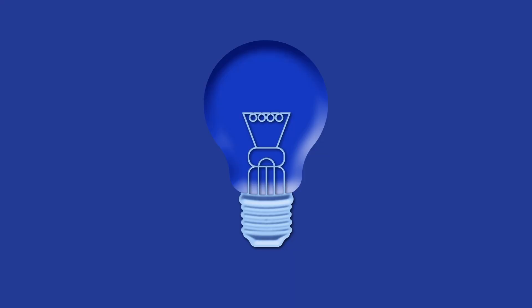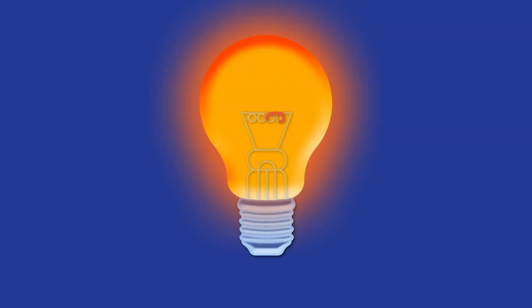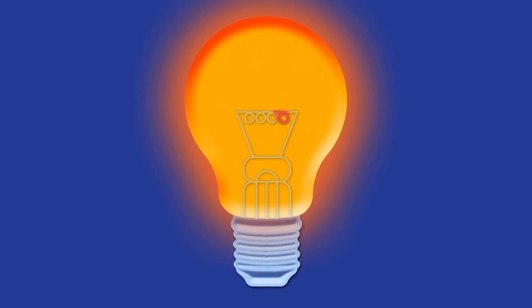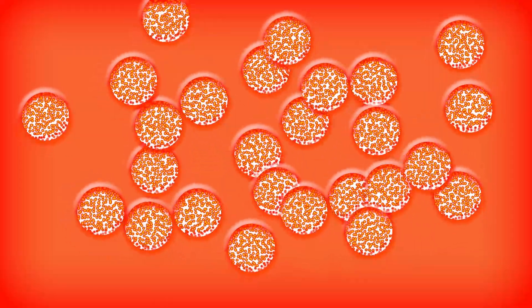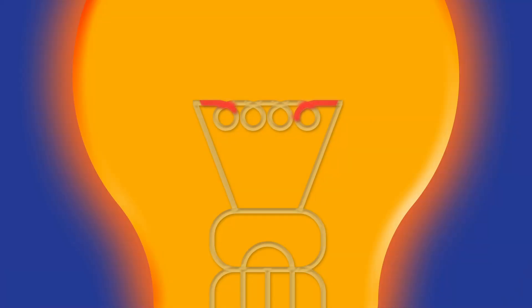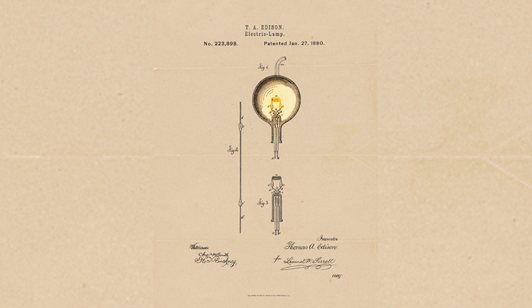First and foremost, light bulbs produce light from a resistant wire that transmits electric current. Molecular agitation begins inside the material and the conductor generates heat. The material will emit electromagnetic radiations, and the hotter the radiation, the more light is produced. There you have it — the science of light in a light bulb. Now let us take it back to the old school.